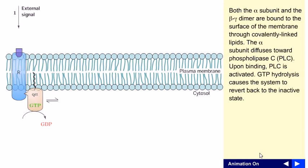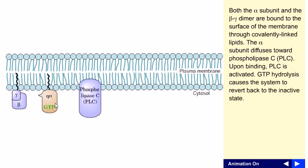The alpha subunit goes and attaches with phospholipase C. The subunit diffuses towards phospholipase C, and upon binding to phospholipase C, it is activated.